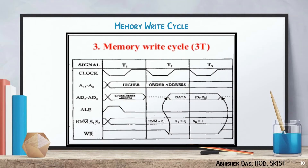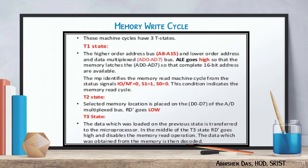This is the timing diagram of the memory write cycle, which consists of 3T-states. The operation of the write cycle is the same as the read cycle, but in T2 state, the RD goes low.